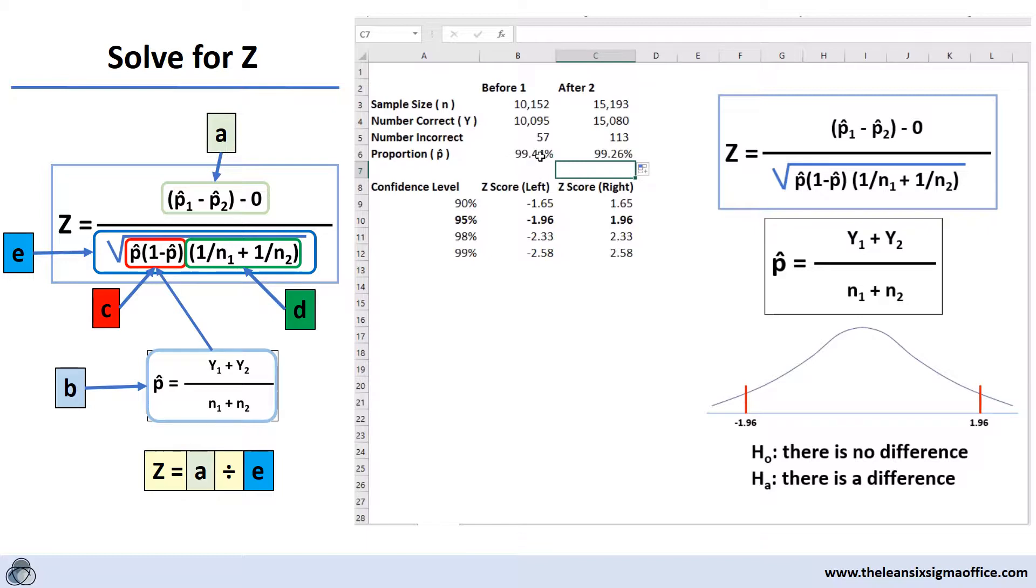One of the things we want to do now is we want to know if this difference in the proportions of before and after is significant. We're going to try to get this at a 95% confidence level. So at the end of this, what we'll be able to tell our leadership or our team is that with 95% confidence we can tell there is or is not a difference between before and after.